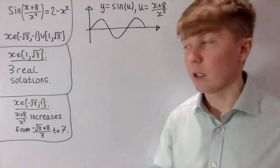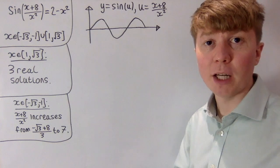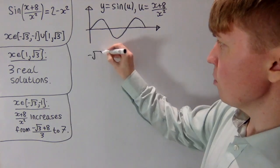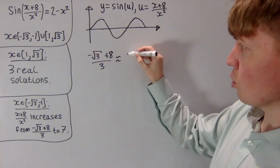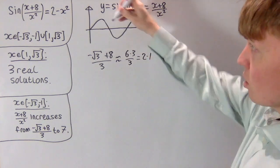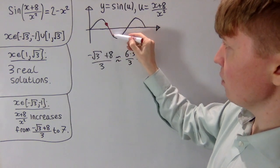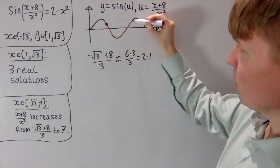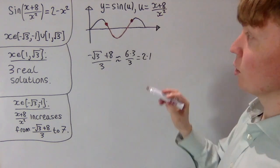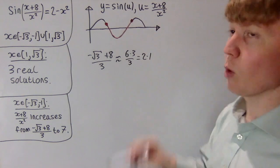For the second region, as x goes from minus root 3 to minus 1, (x+8)/x² increases from (minus root 3 + 8)/3 up to 7. Using the approximation minus root 3 is around minus 1.7, the starting value is roughly 6.3/3, which is 2.1 — between pi/2 and pi. So sine of (x+8)/x² starts between 1 and 0, decreases all the way to minus 1, then increases, but doesn't quite reach the next turning point since 7 lies between 2pi and 2.5pi.